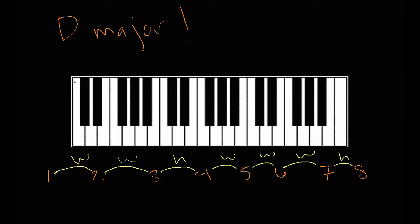So if we're in D major, we can figure out the D major scale. Obviously the first note we're going to start out on D. And then we're going to go a whole step up from D — from D to D sharp to E. So a whole step up from D is E, making E the second note. Then from E we go a whole step up: from E to F is a half step, and then from F to F sharp. So F sharp is going to be the third note.